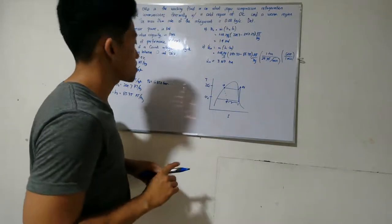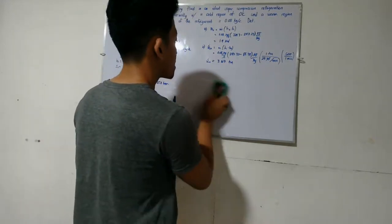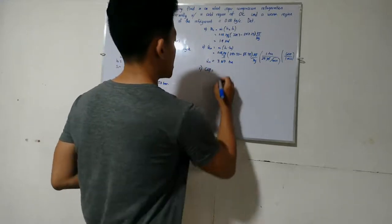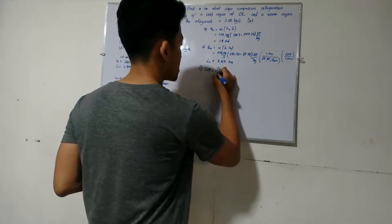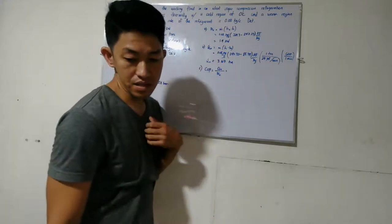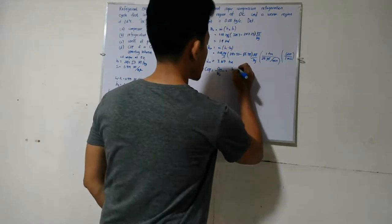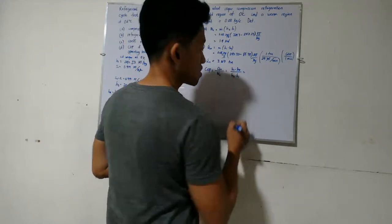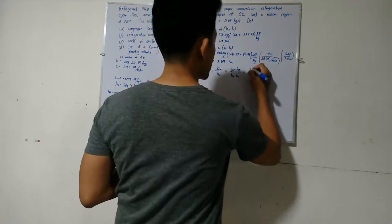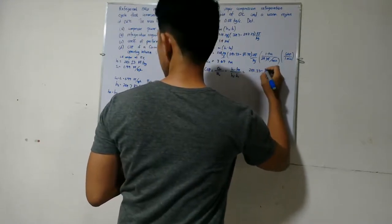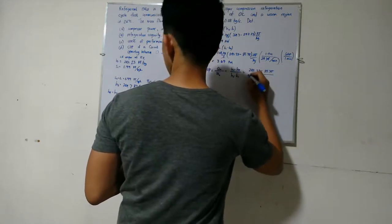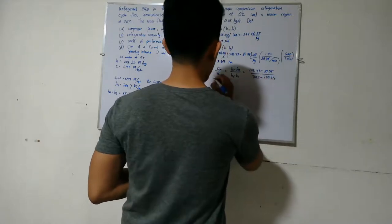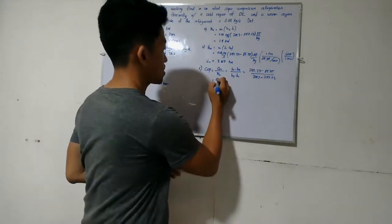For the coefficient of performance: beta = Q in / W compressor = (h1 − h4) / (h2 − h1) = (247.23 − 85.75) / (264.7 − 247.23) = 9.24.